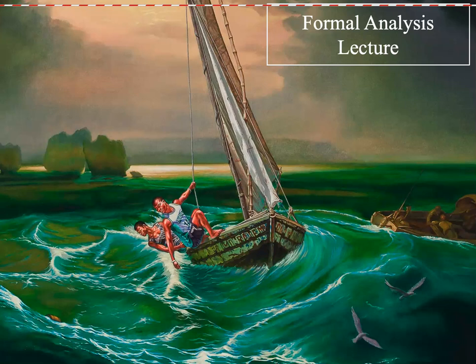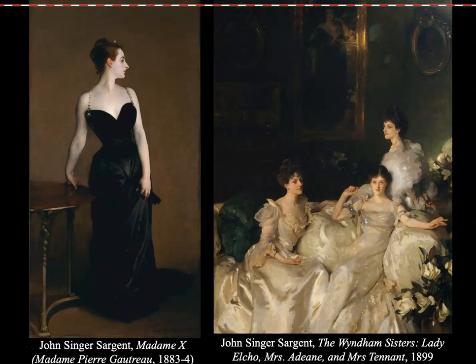We're going to do another example of formal analysis, and I want you to look at these next paintings by John Singer Sargent. There are two sets of portraits — two different paintings not related to each other, except that they're both by John Singer Sargent. I want you to write down some formal elements using those formal worksheets, really engaging with them. Write down about five things for each work — ten total — and include that in your response due next Tuesday. I'm going to show some pictures here of the paintings, and then we'll watch the video.